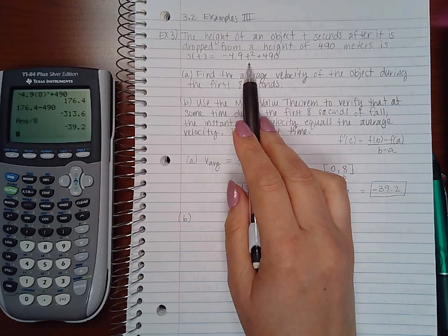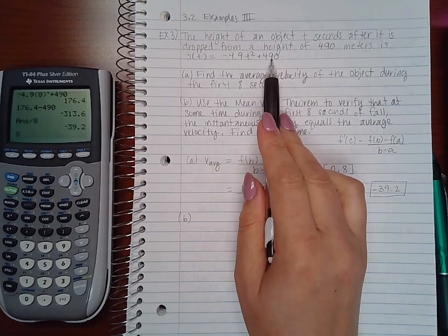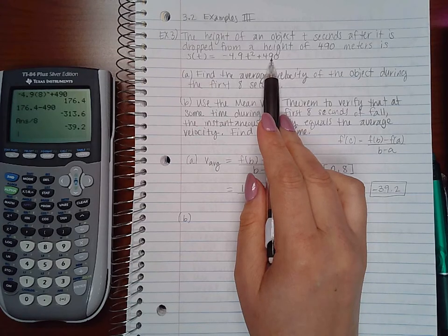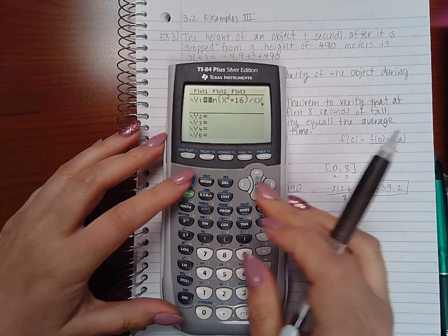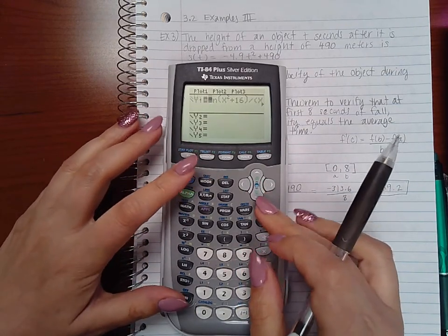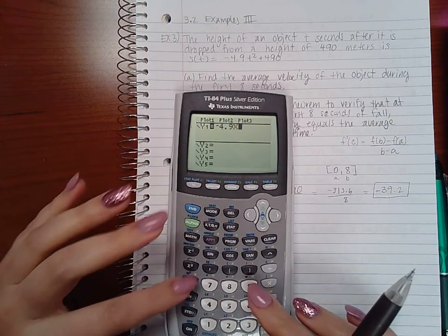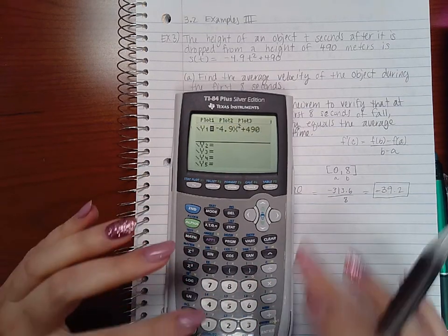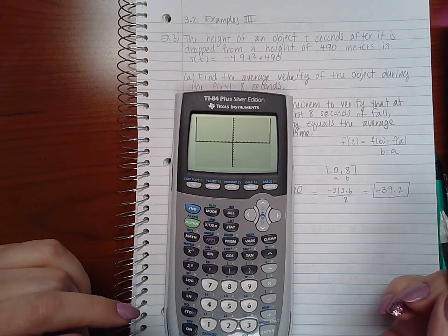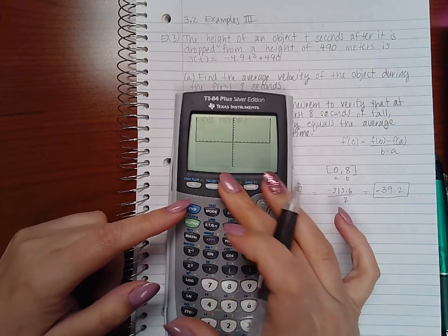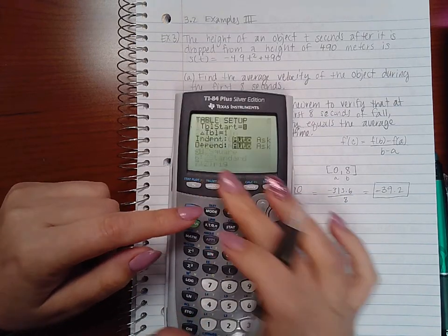So we have to figure out the two criteria for the mean value theorem to apply. The first is: is this function continuous? It's a squared function, it opens downward, and it is going to be shifted up 490. So if I go to my function here and I type in -4.9x² + 490 and I graph this thing here.